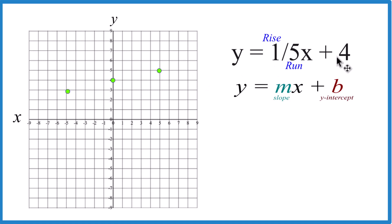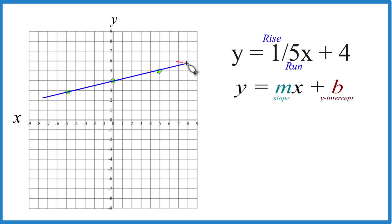You can see the line for y equals 1/5x plus 4 right here. Let's put a line through it. Then we'll put arrows to show it goes to infinity, and that's our graph.